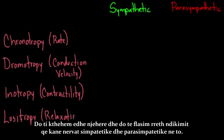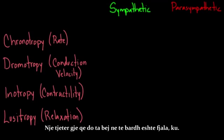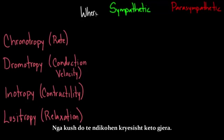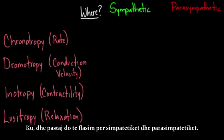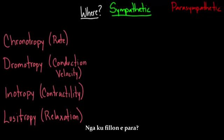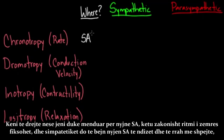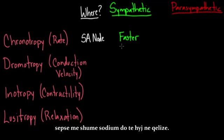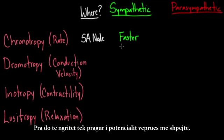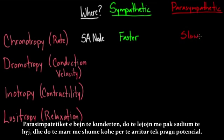Let's go through these one at a time and talk about the effects of the sympathetics and parasympathetics. Chronotropy occurs primarily at the SA node, where the heart rate is set. Sympathetics make the SA node fire faster by allowing more sodium into those cells, reaching the threshold for an action potential more quickly. Parasympathetics do the opposite — they allow less sodium to flow in, so it takes longer to reach the threshold potential.